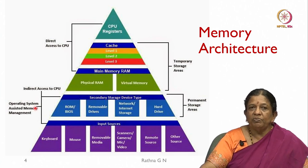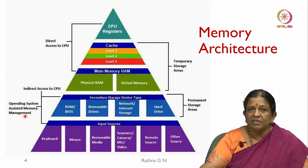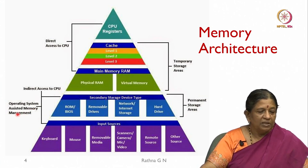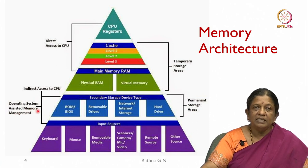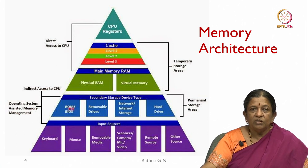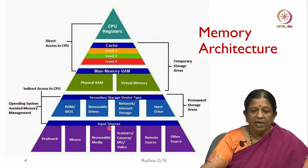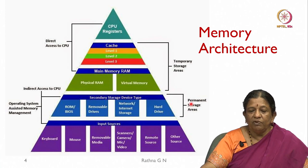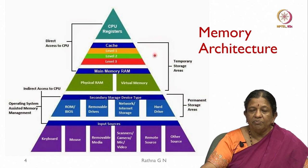Some of these have an overlapping spectrum. These are assisted memory management. Secondary storage devices are the permanent storage areas, while registers and cache are the temporary storage for the processor.